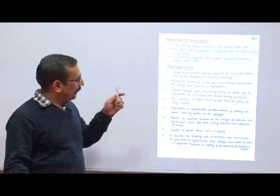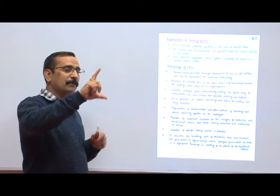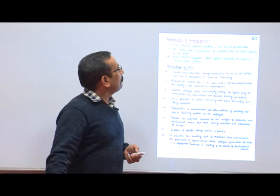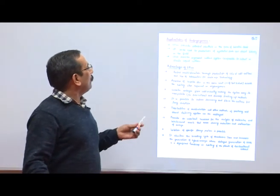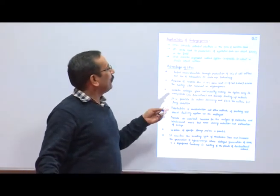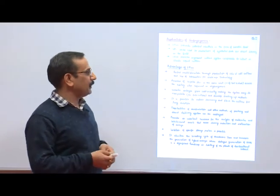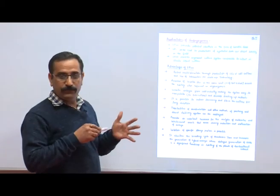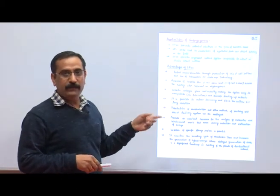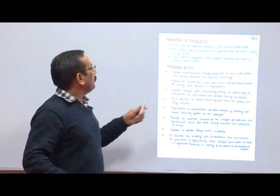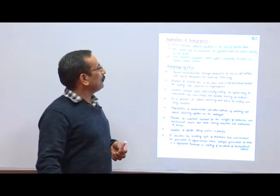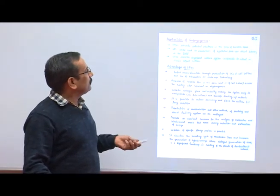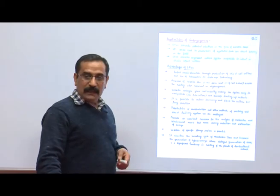Presence of bipolar structure — two poles on the embryo: plumules and radicals. The bipolar structure has both a root and shoot, avoiding the rooting step required in organogenesis. If we use organogenesis, we require initiation of roots, but in somatic embryogenesis there is no requirement for initiation of roots. Somatic embryogenesis grows individually, making the system easy to manipulate in subcultures and develop scale-up methods.